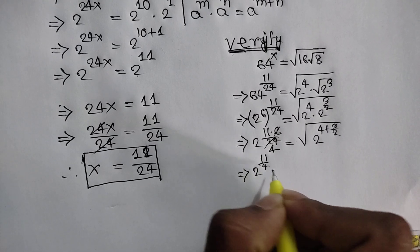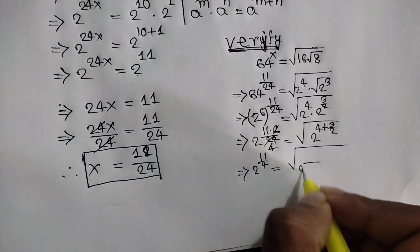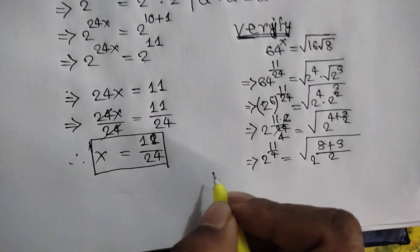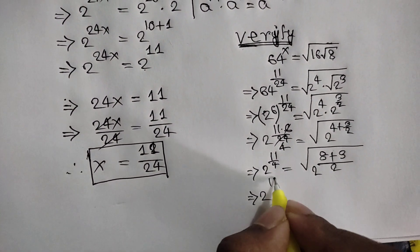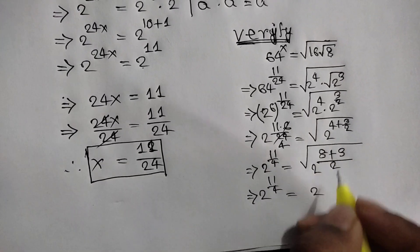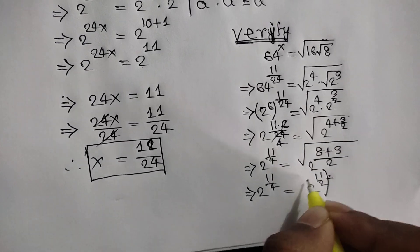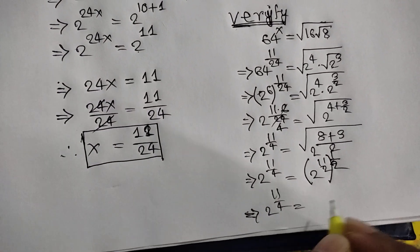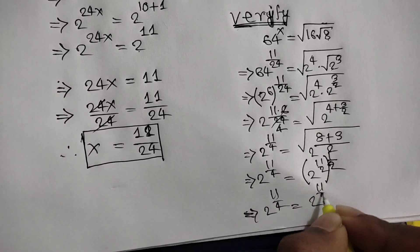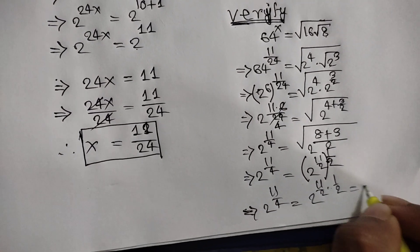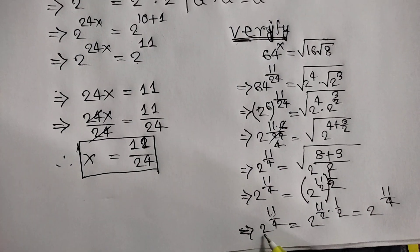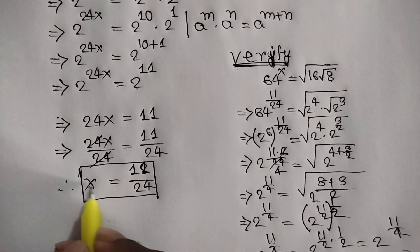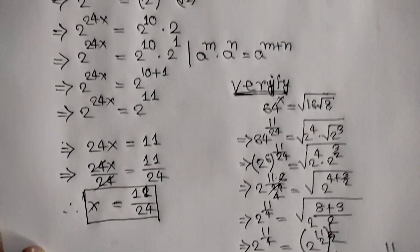This gives us 2 to the power 11 over 4 is equal to 2 to the power 11 over 4. The left side and right side are equal, so our equation is verified. The value of x is 11 over 24. Thank you for watching.